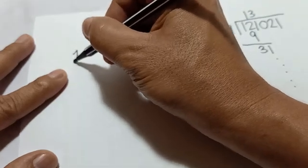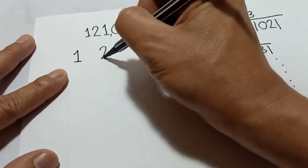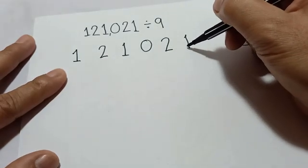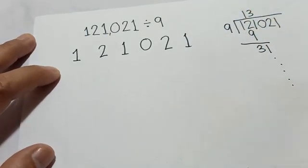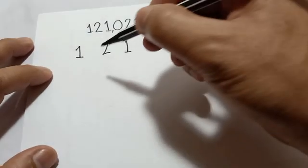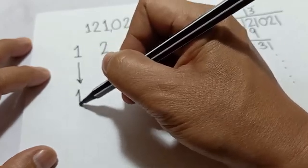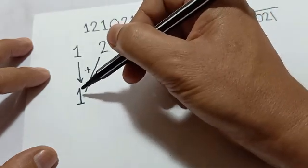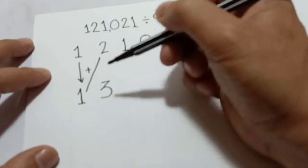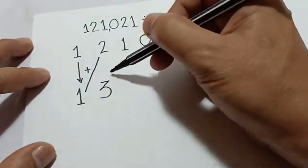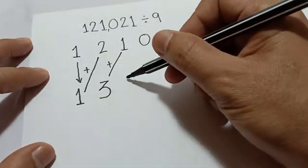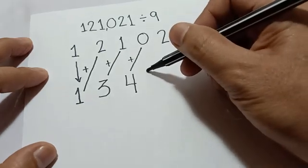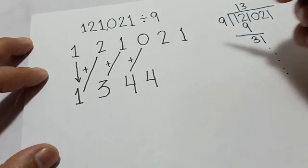I'm just going to rewrite it and put a space so you can see the difference between the traditional way and my way. So: 1, 2, 1, 0, 2, 1. Remember, we're going to divide one hundred twenty-one thousand and twenty-one by nine. All you have to do is copy the first digit — one — here. Then you add two, so one plus two is three.